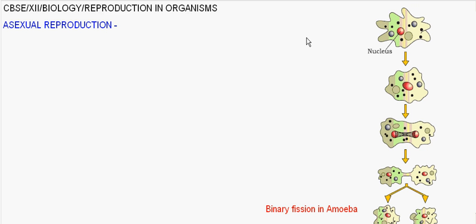This cycle of living beings — growth, reproduction, death — keeps on, year after year. In asexual reproduction, no gametes are produced. A single parent cell can give rise to two or more progenies.